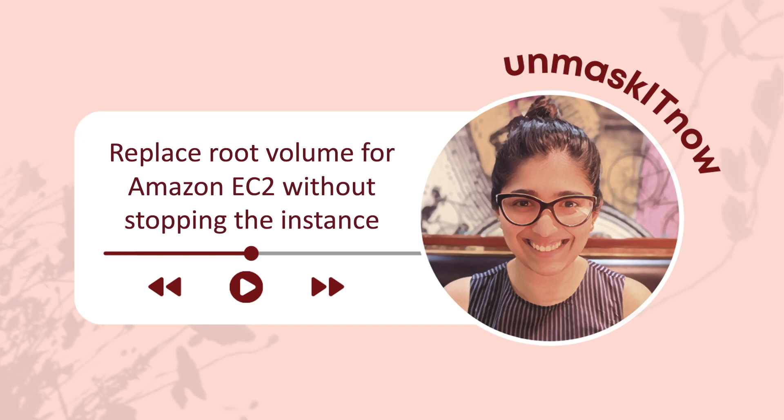Previously, if we had to replace the root volume of an EC2 instance — in the event of root volume corruption or any OS issues — we needed to perform a bunch of steps, which included having to stop the instance, detach the root volume, create a new volume from the snapshot, then attach the new volume to the instance, and start the instance back. Phew — that's a number of steps!